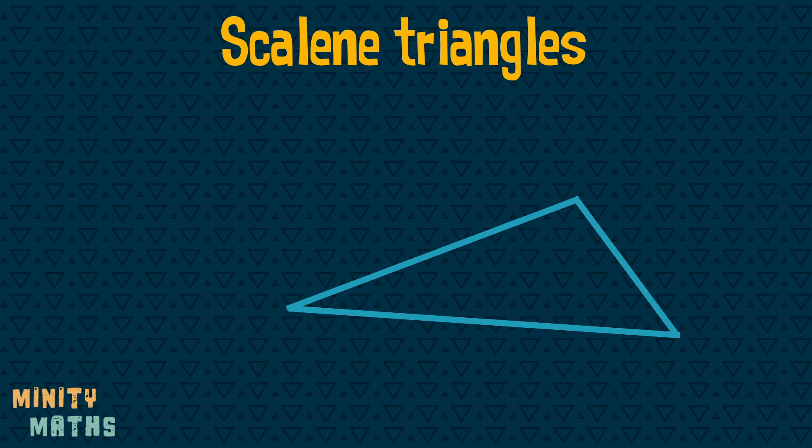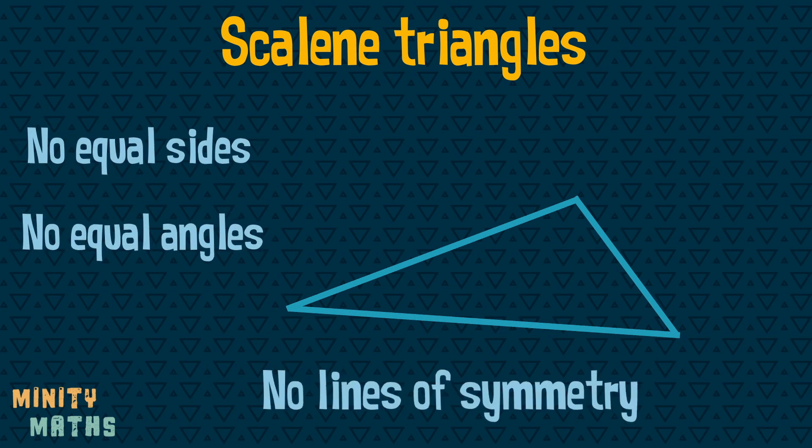Finally, a scalene triangle has no equal sides and no equal angles. It also does not have any lines of symmetry.